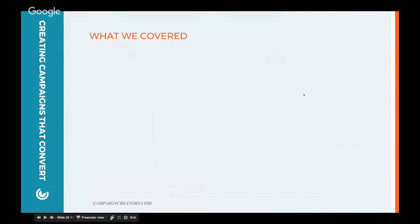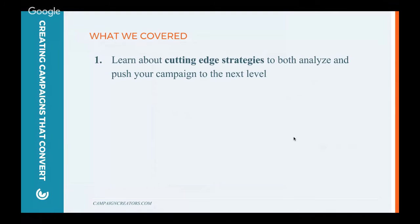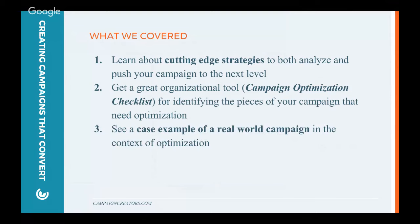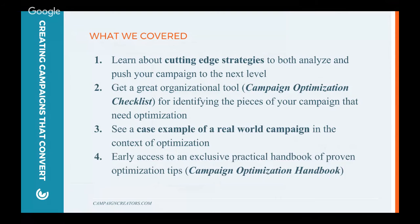We're getting close. We want to make sure everything covered makes sense. First, you came here to learn about cutting edge strategies to analyze and push your campaign to the next level — hopefully you got some of those from the tools we shared. Second, to get a great organizational tool, namely the campaign optimization checklist. We'll send that over to you directly after the webinar. Third, Nick walked us through a powerful case example in the context of optimization. And finally, giving you early access to an exclusive practical handbook of proven optimization tips — the campaign optimization handbook — which we'll be delivering to you in about two weeks.